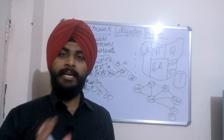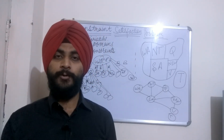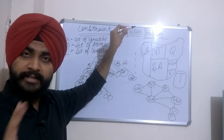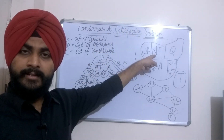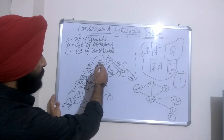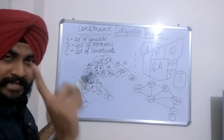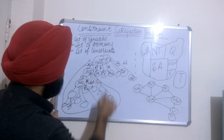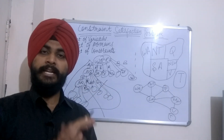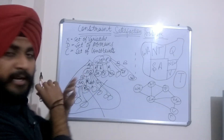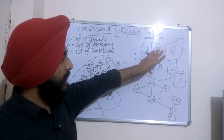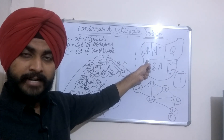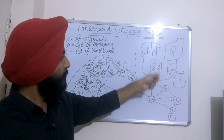Ab hum laate hain constraint satisfaction problem ko. Maine ek constraint de diya: jo do territories saath mein hain, jo do territories neighboring hain, unme same color nahi ja sakta. Isse kya faida hua? Western Australia red ho gaya — matlab Northern Territory mein red nahi ja sakta. Matlab yeh jo saara state space tree hum bana rahe the pehle, ab uska koi tuuk hi nahi hai — usse banane ki koi need hi nahi.